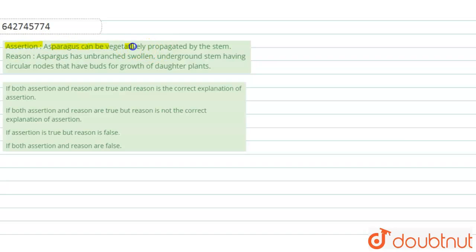And reason is asparagus has unbranched swollen underground stem having circular nodes that have buds for growth of daughter plants. Okay, so we have to tell if the assertion and reason is correct or incorrect.